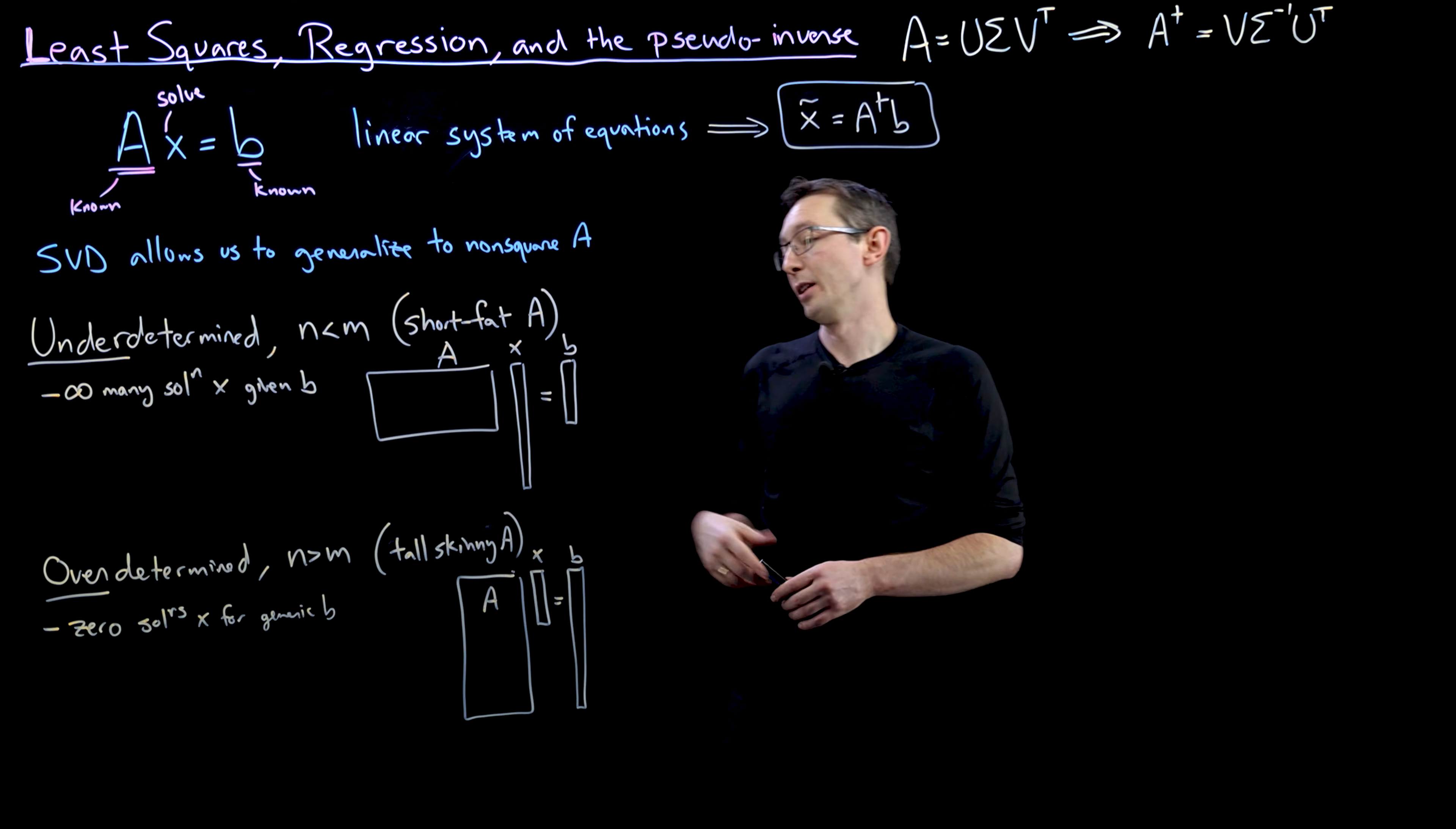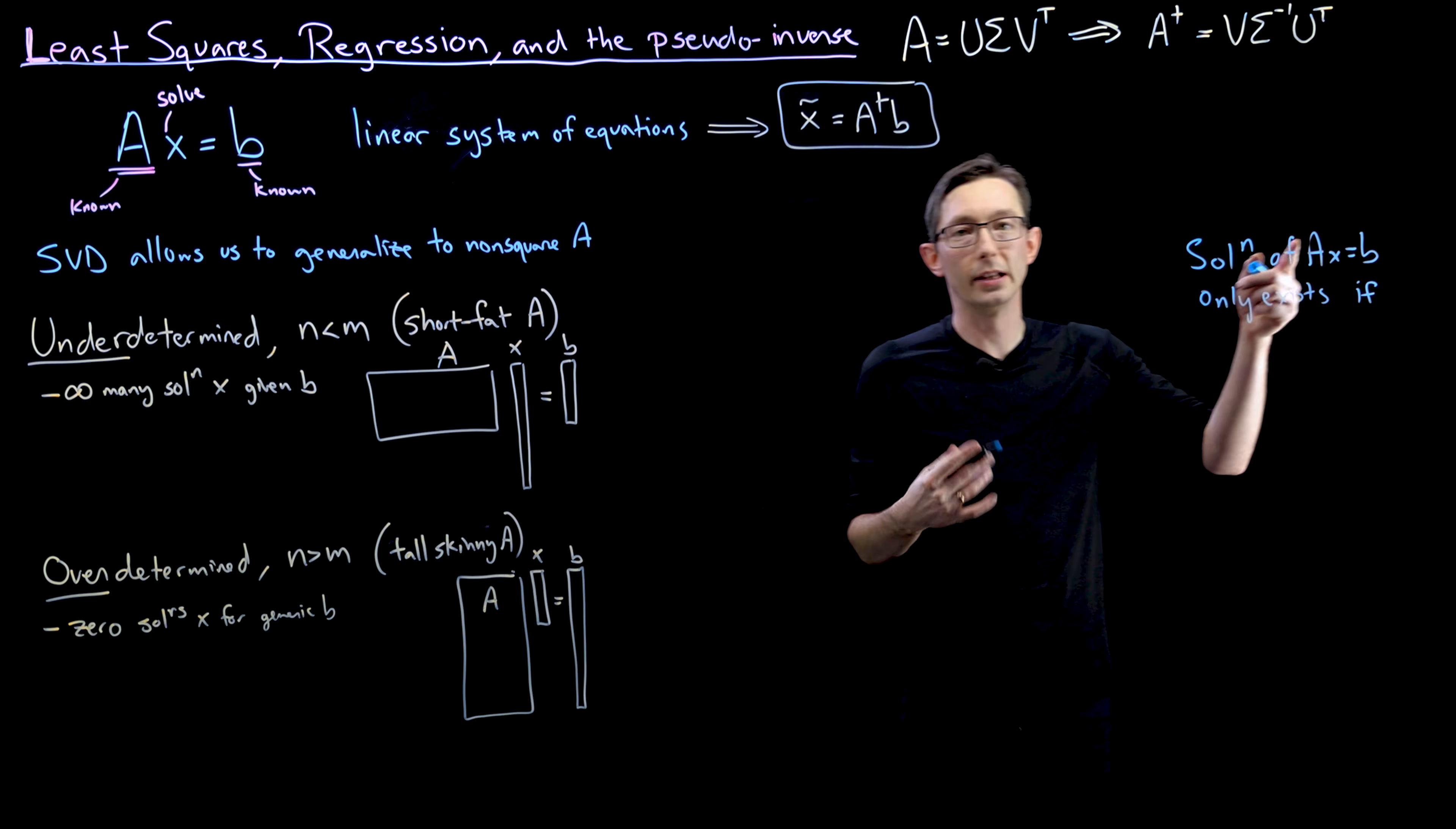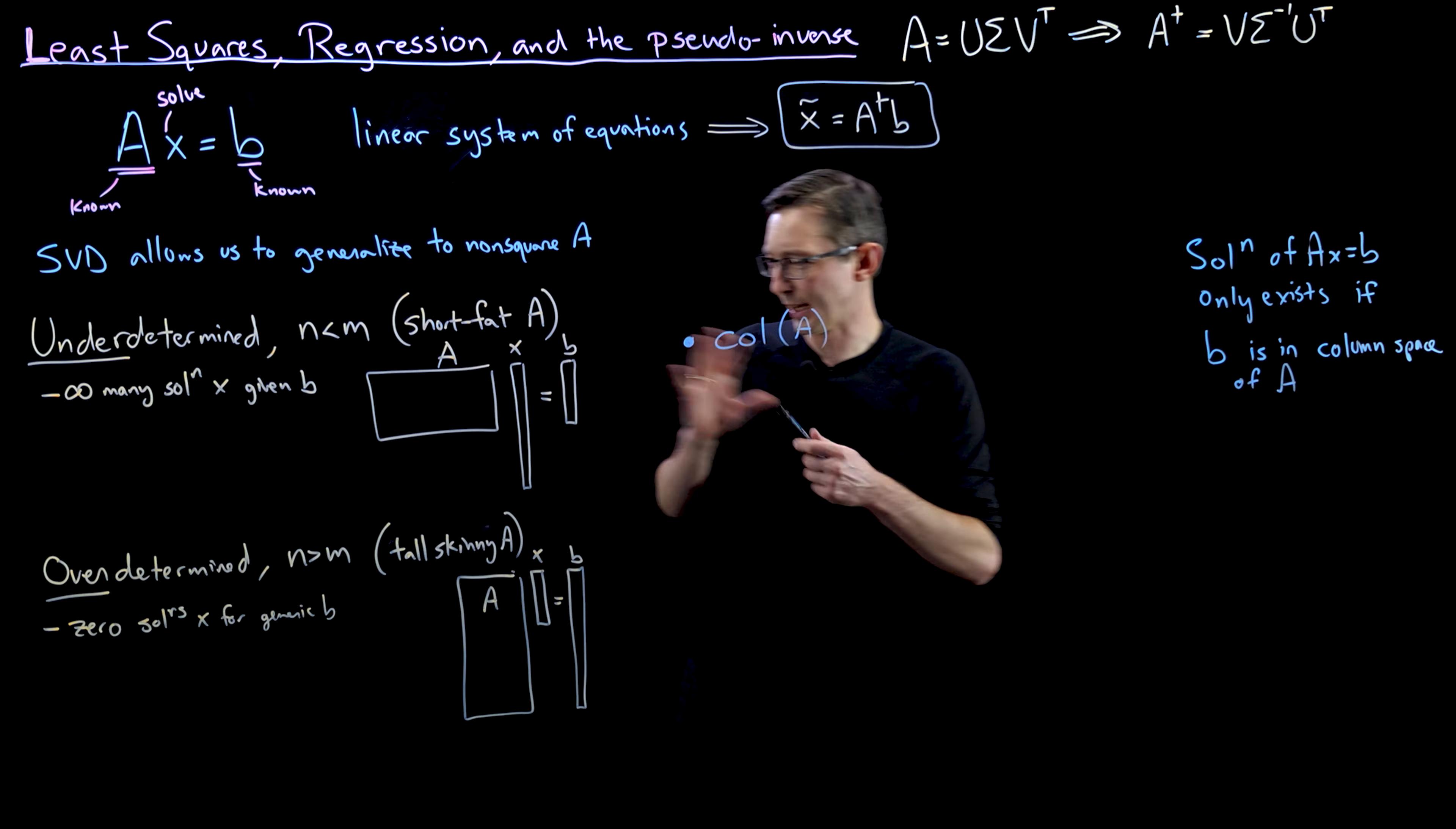And it's going to relate to when you can get exact solutions or when you can only get approximate solutions. So remember that the solution of AX equal to B, the solution of AX equals B only exists if, so if and only if, B is in the column space of A. And we're going to denote this column space literally by column of A.